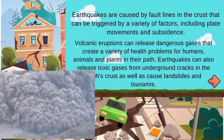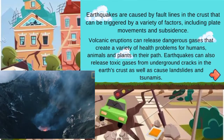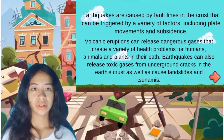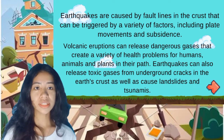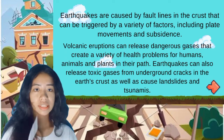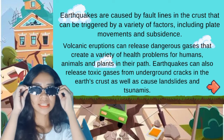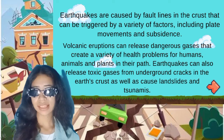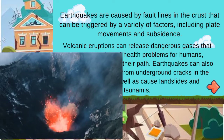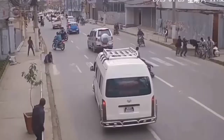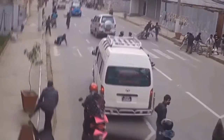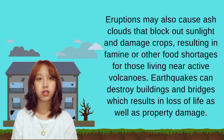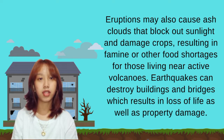Volcanic eruptions can release dangerous gases that create a variety of health problems for humans. Earthquakes can also release toxic gases from underground in the Earth's crust, as well as cause landslides and tsunamis. If we notice, when one cause occurs — for example a volcanic eruption — there are possibilities that there will also be an earthquake because of the movement of tectonic plates. Eruptions may also cause ash clouds that block out sunlight and damage crops, resulting in famine or food shortages for those living near active volcanoes.